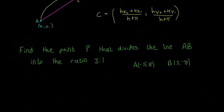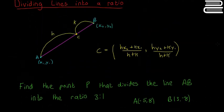And the ratio they want is 3 to 1. So one thing I probably should have written up here, this formula here will divide it up into the ratio H to K. So whichever number is in front, that's H, whichever number is on the right, that's K.